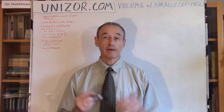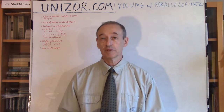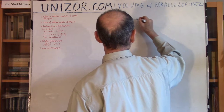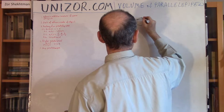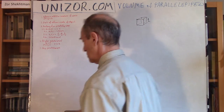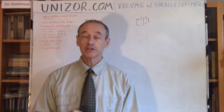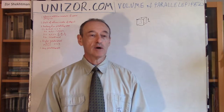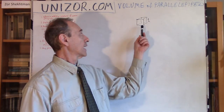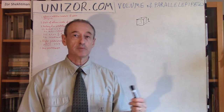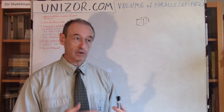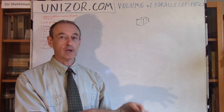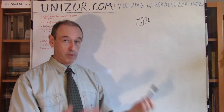Obviously, if we are measuring something, we have to have a unit of measurement. The unit of measurement of volume is, by definition, a little cube with an edge equal to some linear unit, like one meter in one system, or one inch in another system. If we have a unit of volume as a cube with edge equal to one meter, it means we are measuring the volume in cubic meters — that's how many of these cubes can fit into a particular solid body, like a parallelepiped.